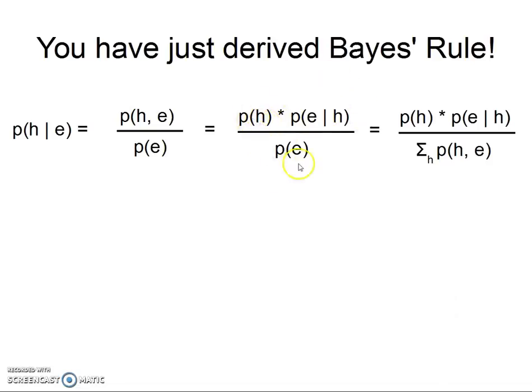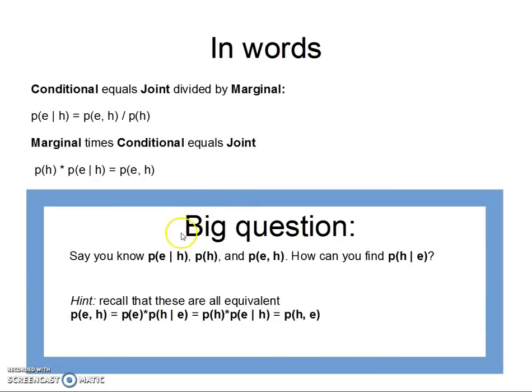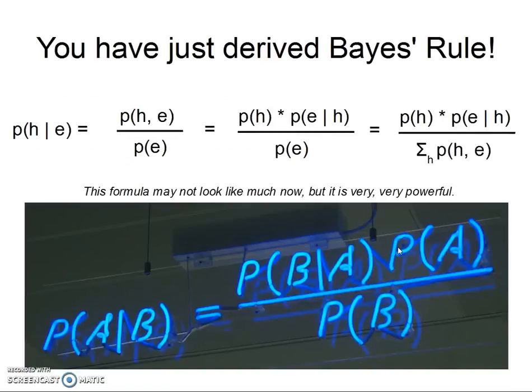So, this right here allows you to go from these three to this one. And boom! Bayes' rule. Very important. It may not look like anything astounding at the moment, but I assure you it's extremely important.